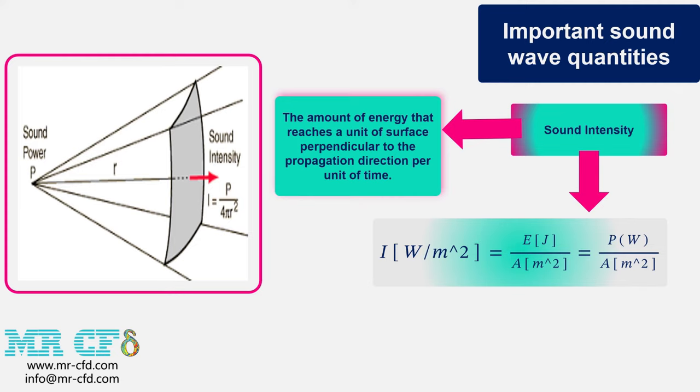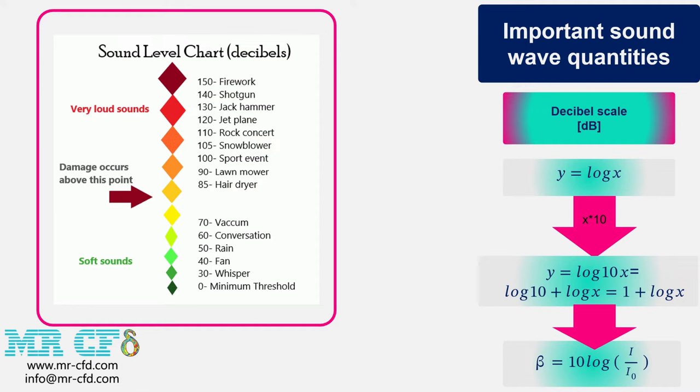Now let's see what the decibel scale is. As it is clear from the human hearing range, the sound intensity ratio for this hearing range is actually the ratio of the most intense to the least intense sound and is a value in the order of 10 to the power of 12. For ease of working with values that changes in such a wide range, we can use logarithmic representation in base 10. For example, consider the function of y equal to the logarithm of x. If we multiply x by 10, the value of y increases by only 1 unit.